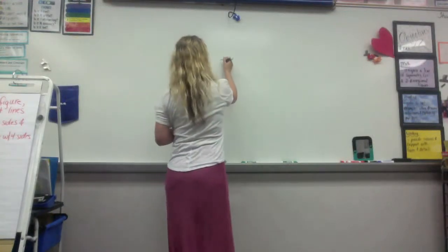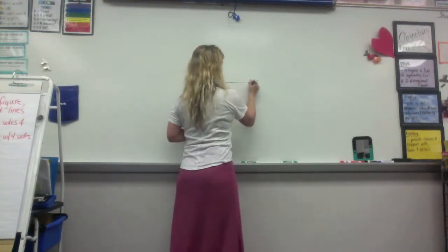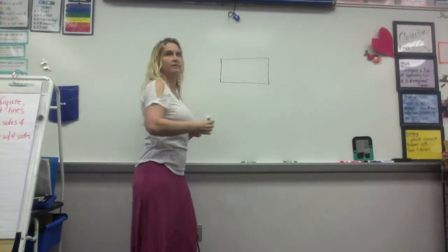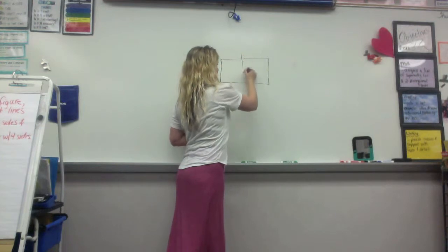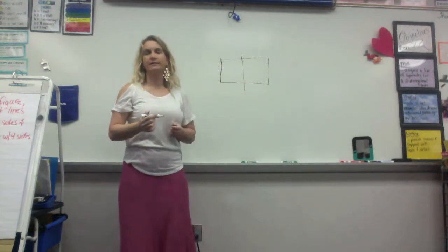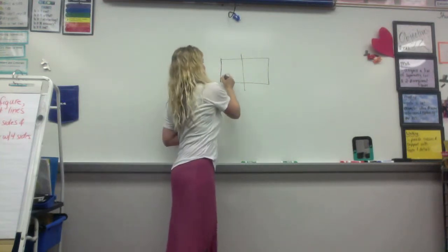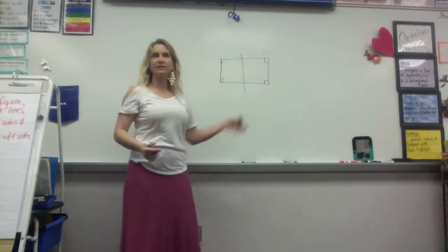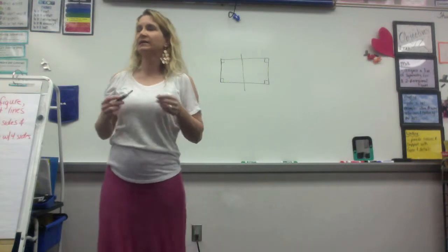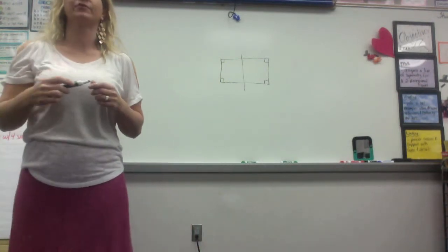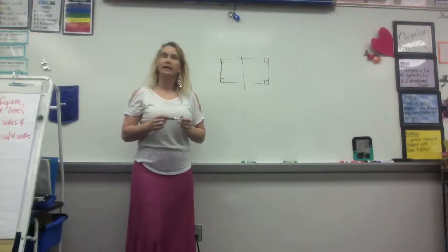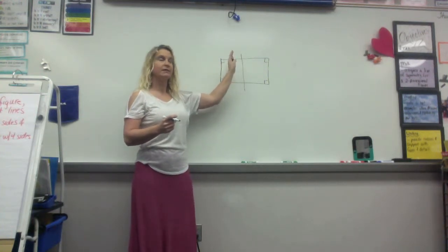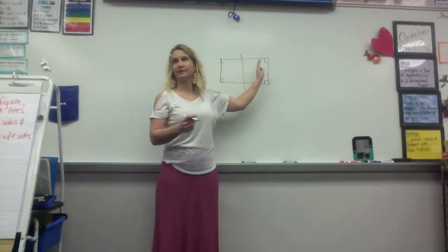Let's look at this figure. I'll make sure you know it's a rectangle. If I put this line through the middle, does it have a vertical line of symmetry? Yes, it does have a vertical line of symmetry, and what that means is that this side is the same as this side.